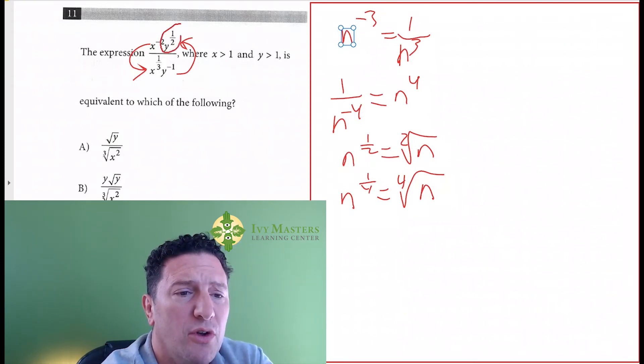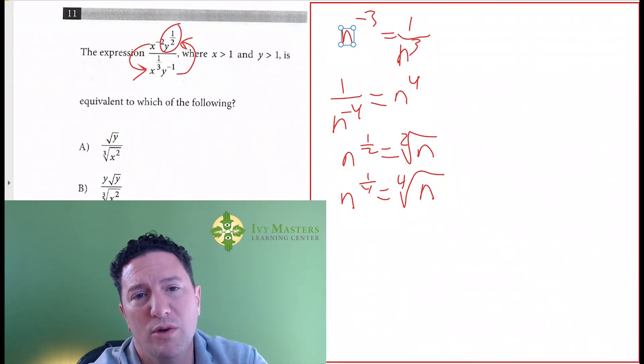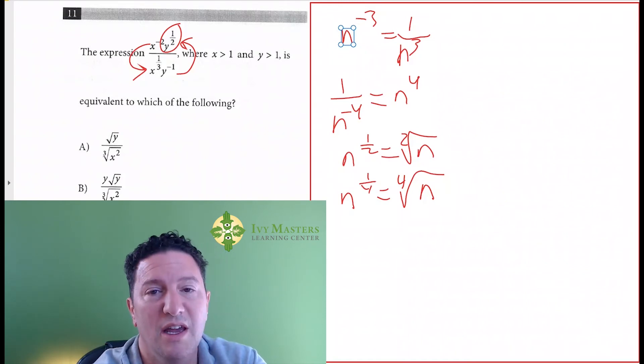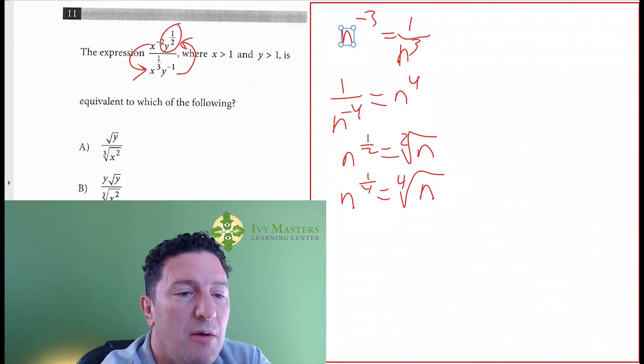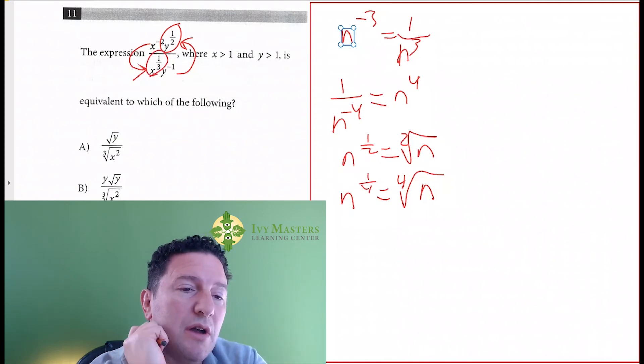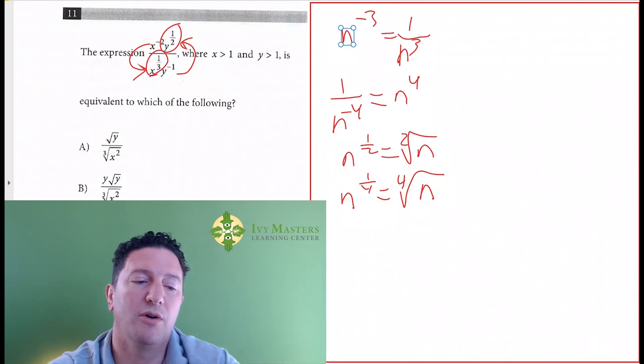Notice up top, you've also got y to the 1 half power, which is the square root of y. Notice in choice D has the square root of y up top. And down below, you've got x to the 1 third power. Notice in answer choice D, you've got the cubed root of x.